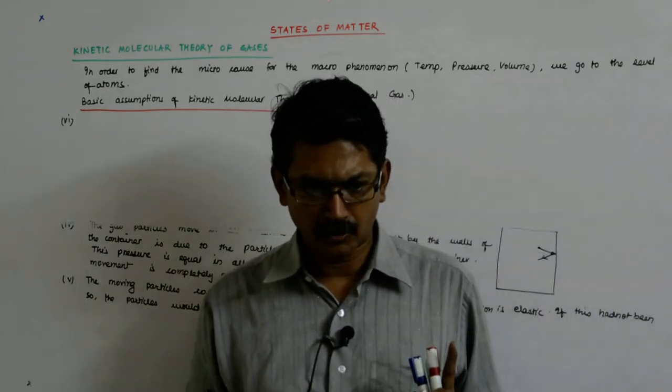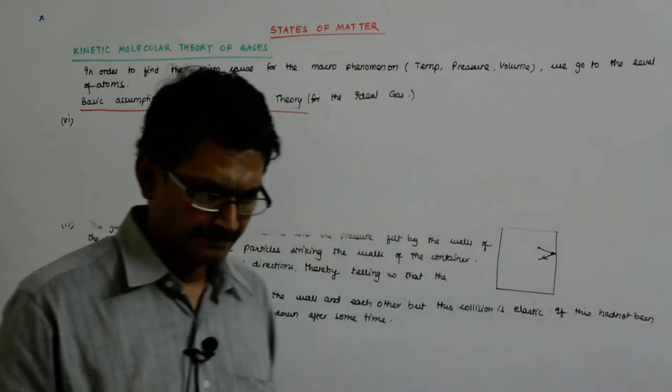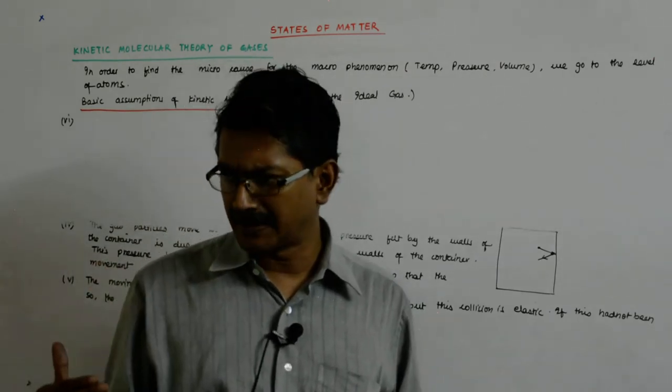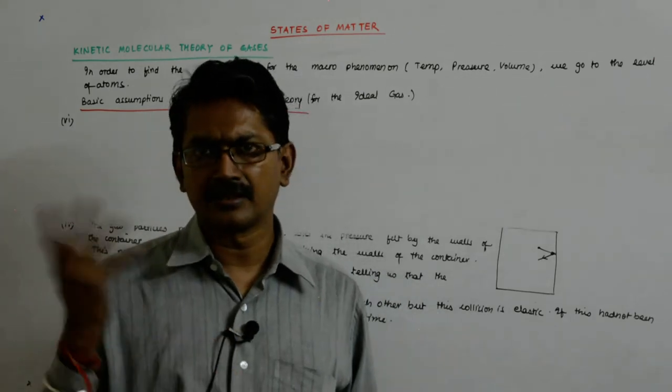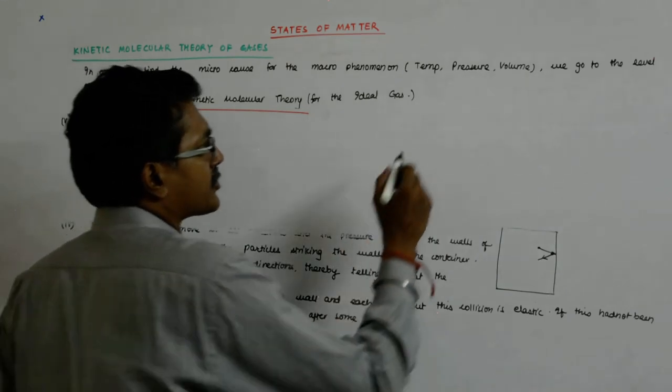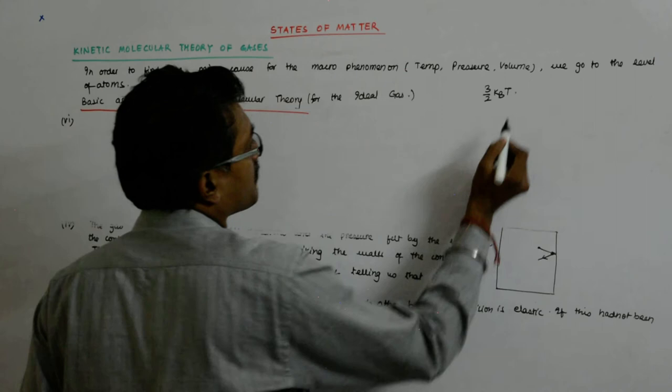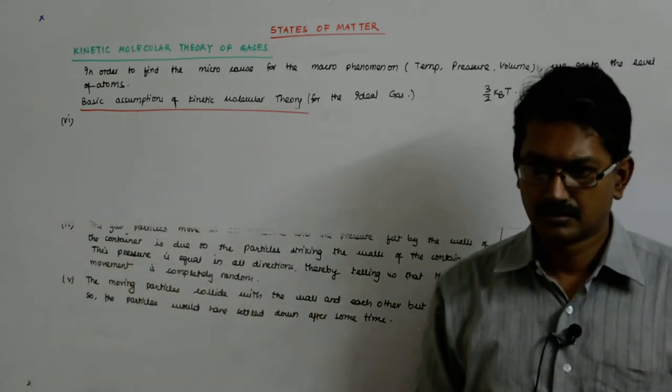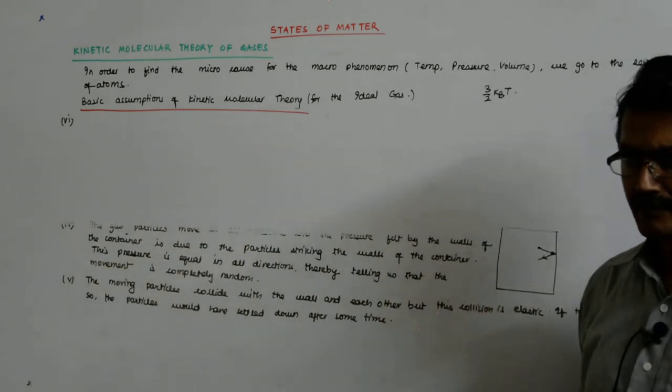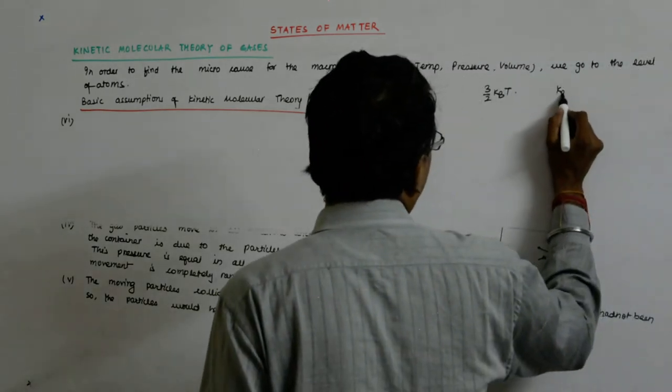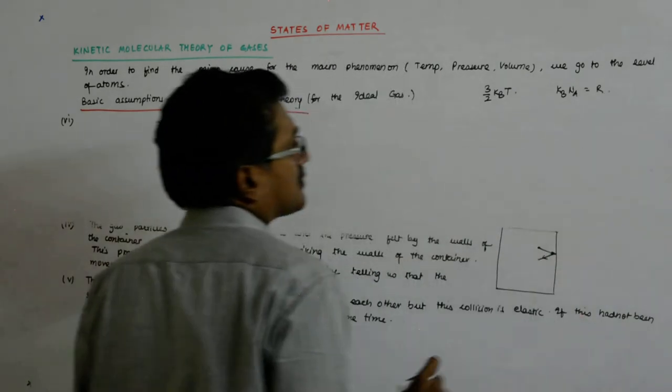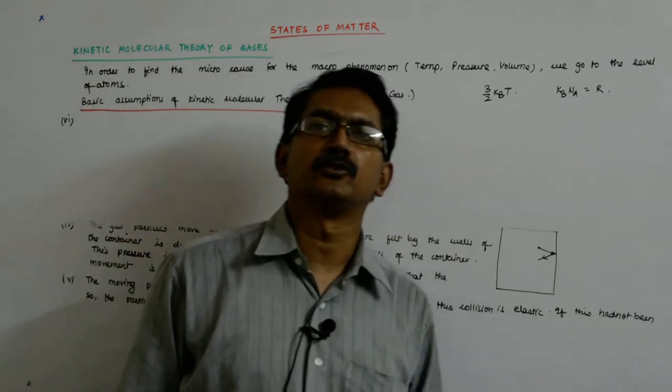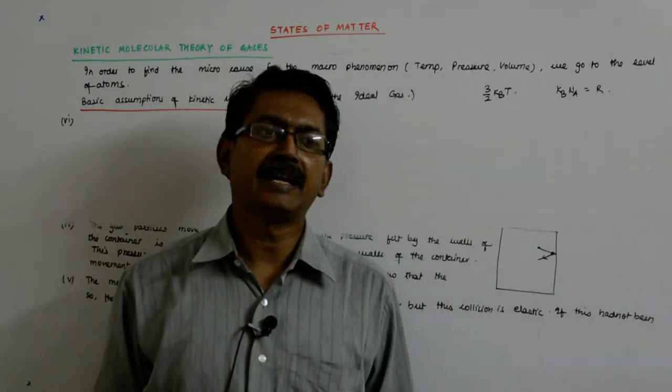When we go to the mathematical analysis in the physics part of kinetic theory of gases, you'll find that the total energy of the molecule is actually 3/2 KBT. It depends on the temperature. This is the energy per molecule. KB is Boltzmann's constant. KB times NA equals R, the universal gas constant we've been using. That's another aspect of it—R is actually KB times NA.